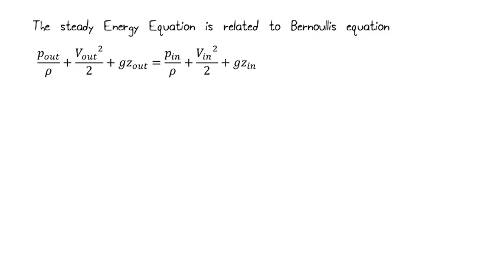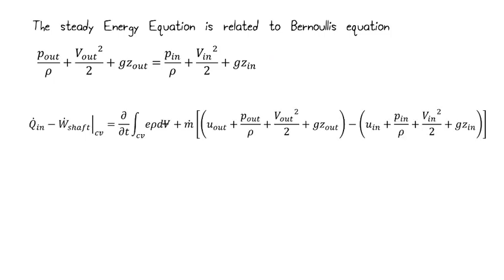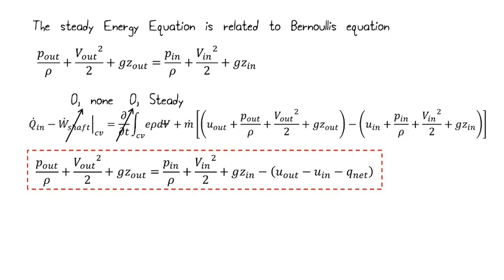One last interesting thing about the energy equation is that we can relate this to Bernoulli's equation. So let's start taking a look at Bernoulli's equation that we've seen before, looking at the relationship of pressure, our V squared, which is kinetic energy, and our GZ, which is the potential energy. Well, here is our form of the energy equation that we just talked about. If we have steady state, meaning DDT, there's no change with respect to time, and we have no shaft work, we're able to get an expression that looks like this.